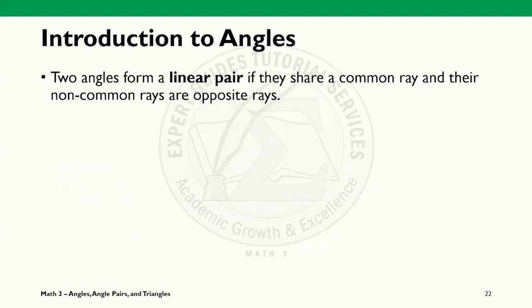Linear pairs are adjacent angles, but with a special relationship where two angles share a non-common ray and their non-common rays are opposite. In this example, angles CLA and angle ALM form a linear pair. The non-common rays are opposite. Ray CL and ray LM points on different directions.